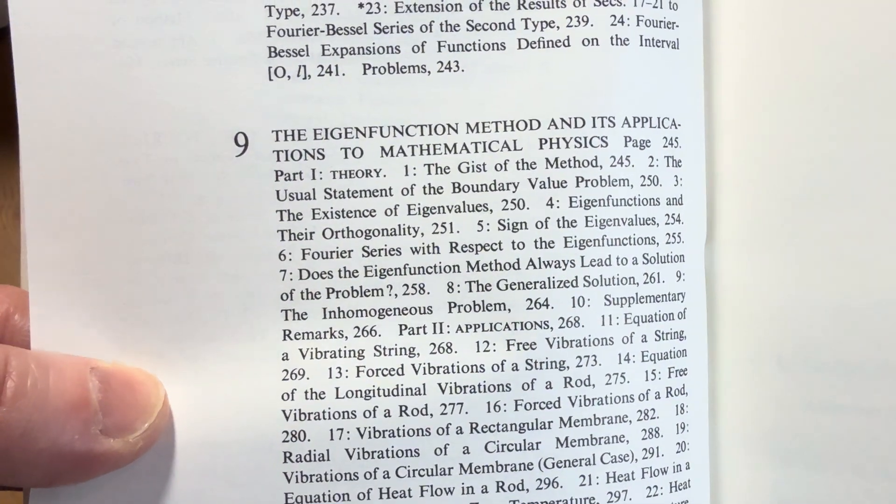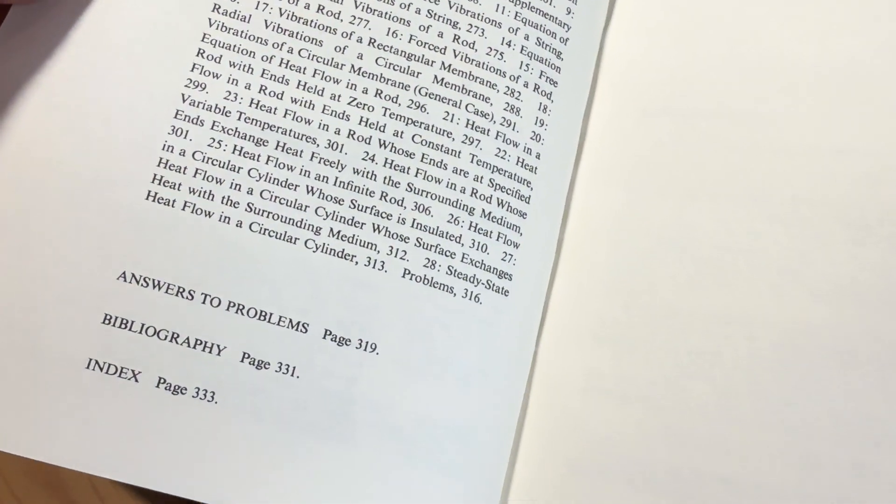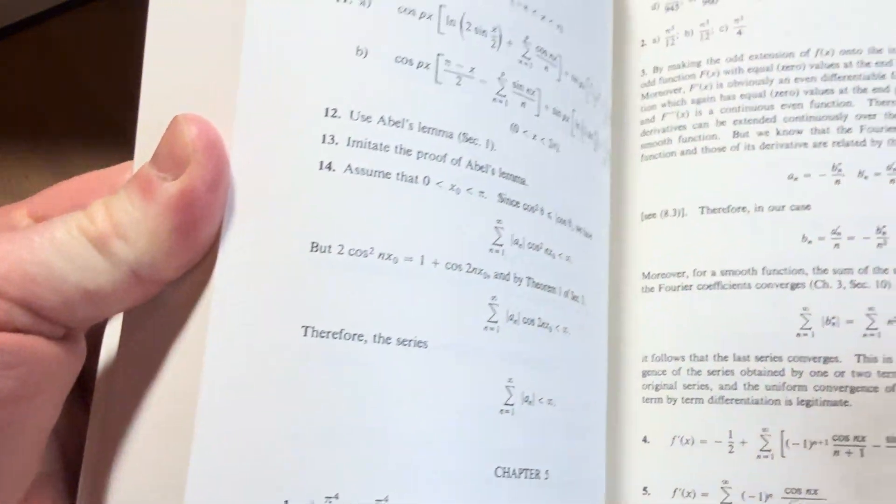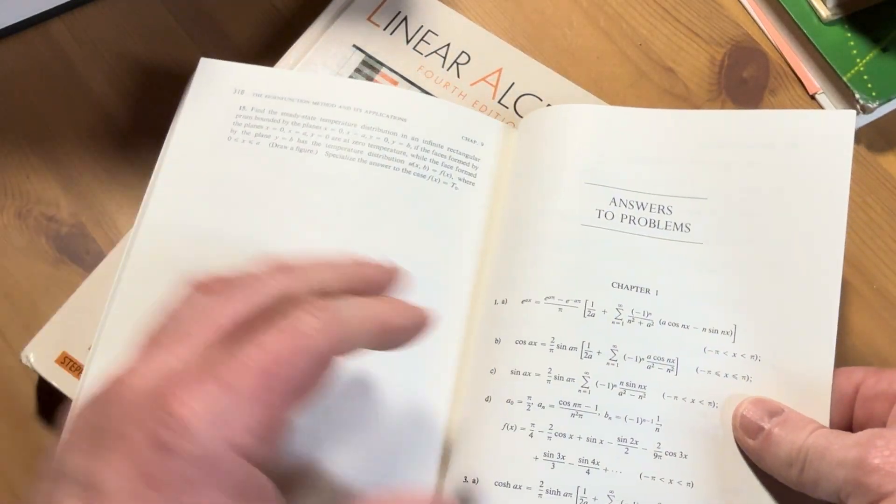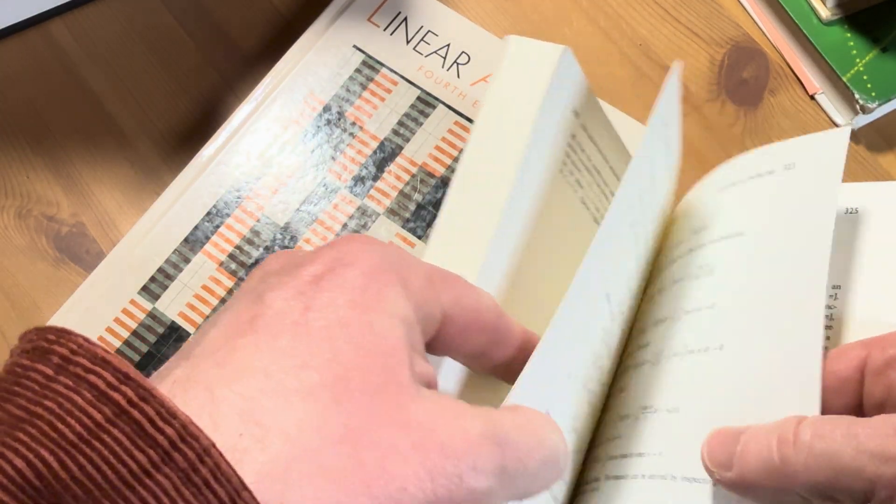And the eigenfunction method and its applications to mathematical physics. So you have answers to problems. Let's go there first. So 319. And you can see here in the back. This is pretty nice. You have some answers. You don't have all of them, but you have some. And that's extremely helpful.